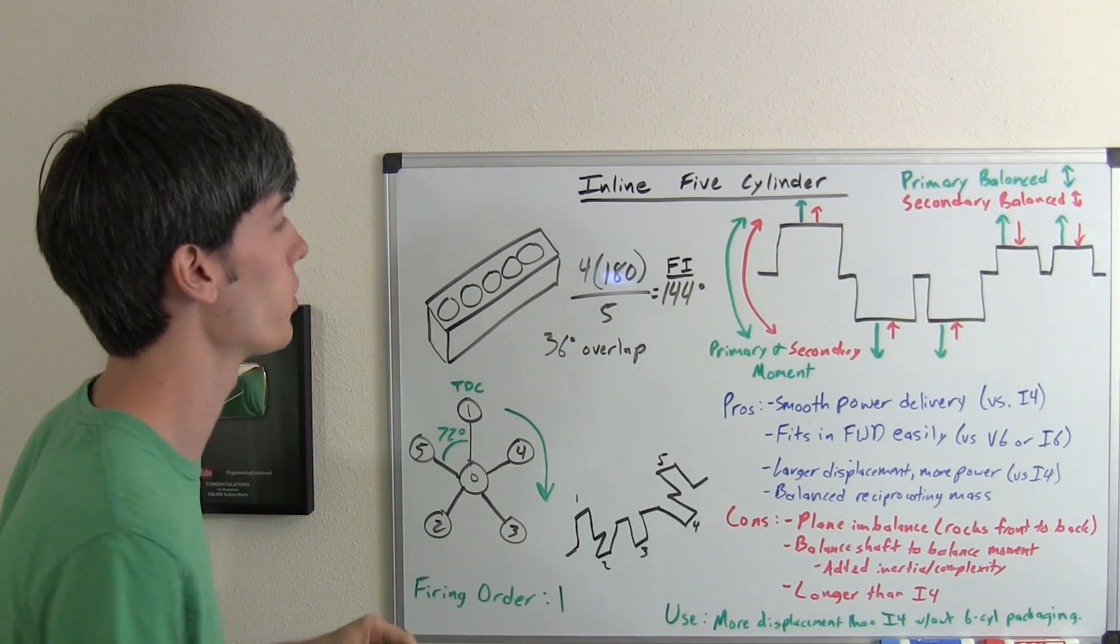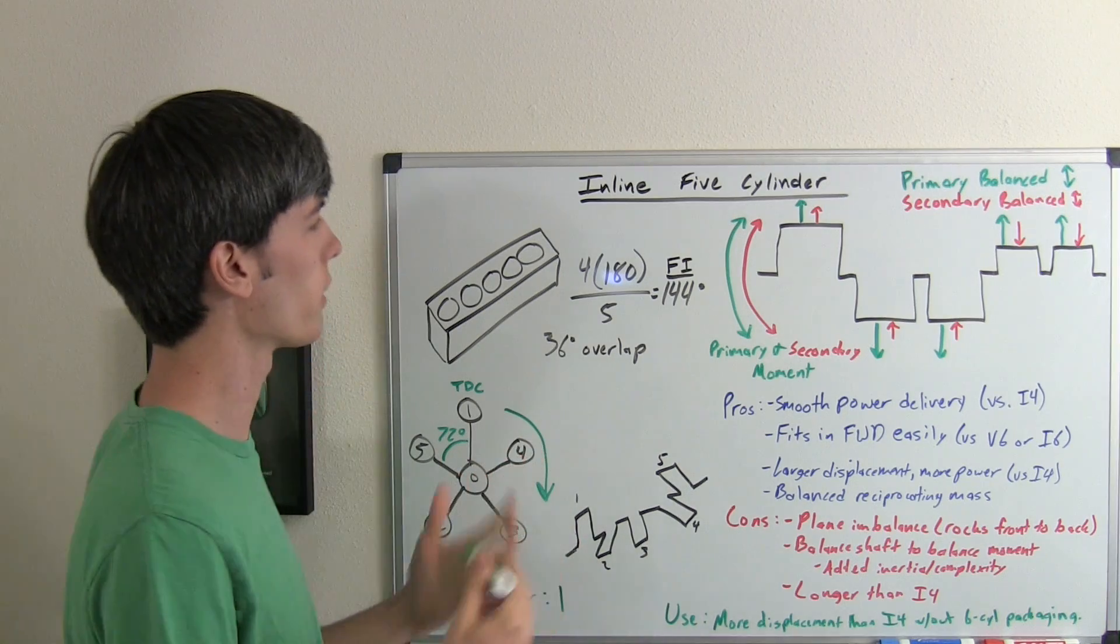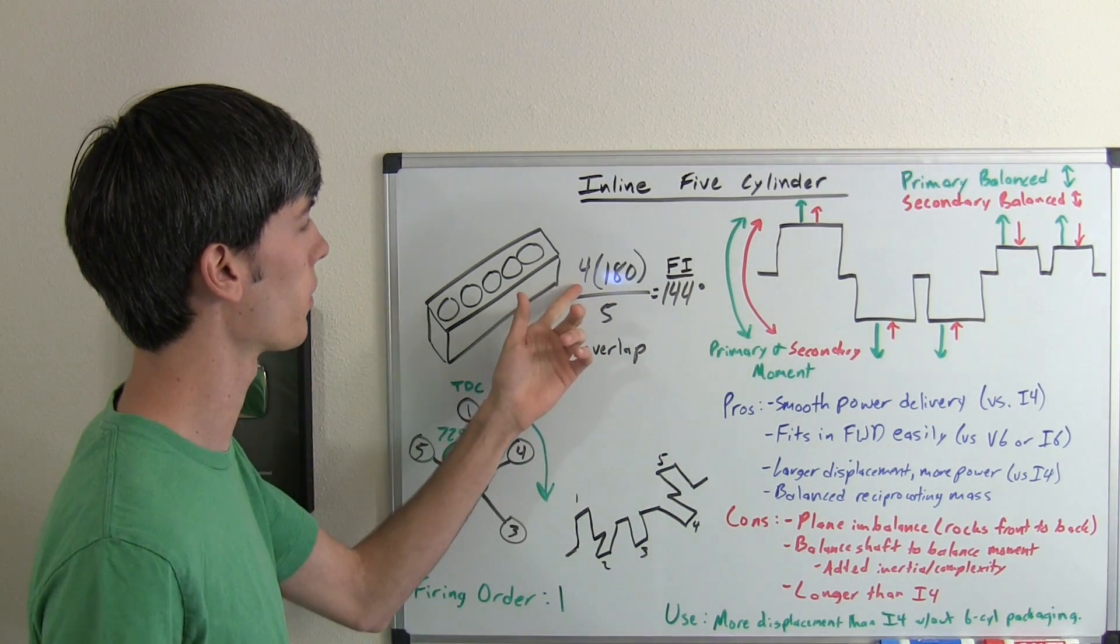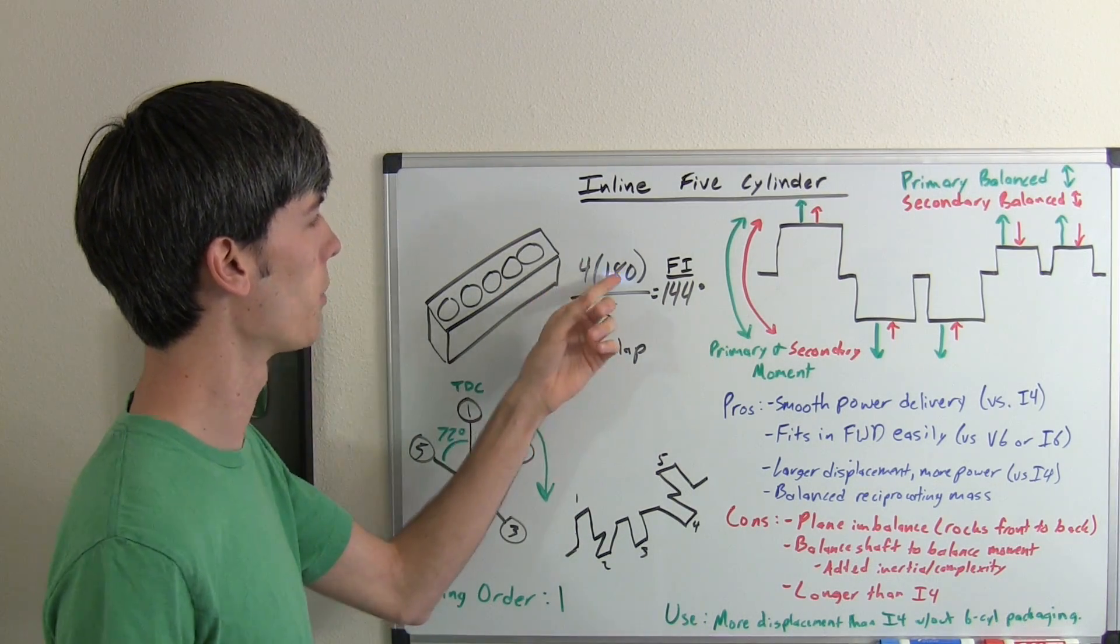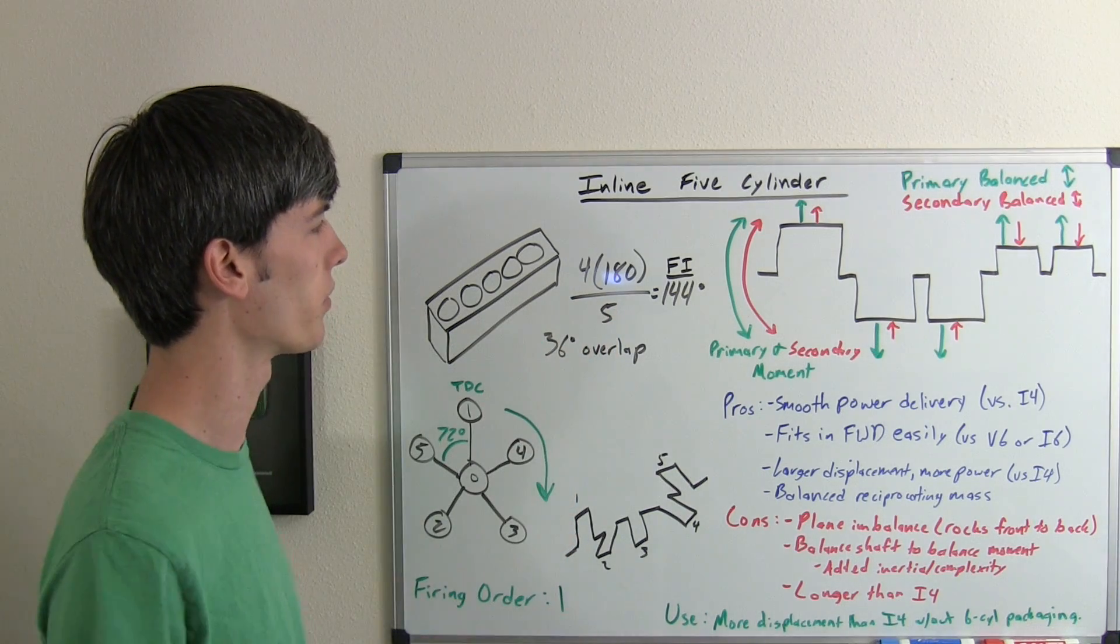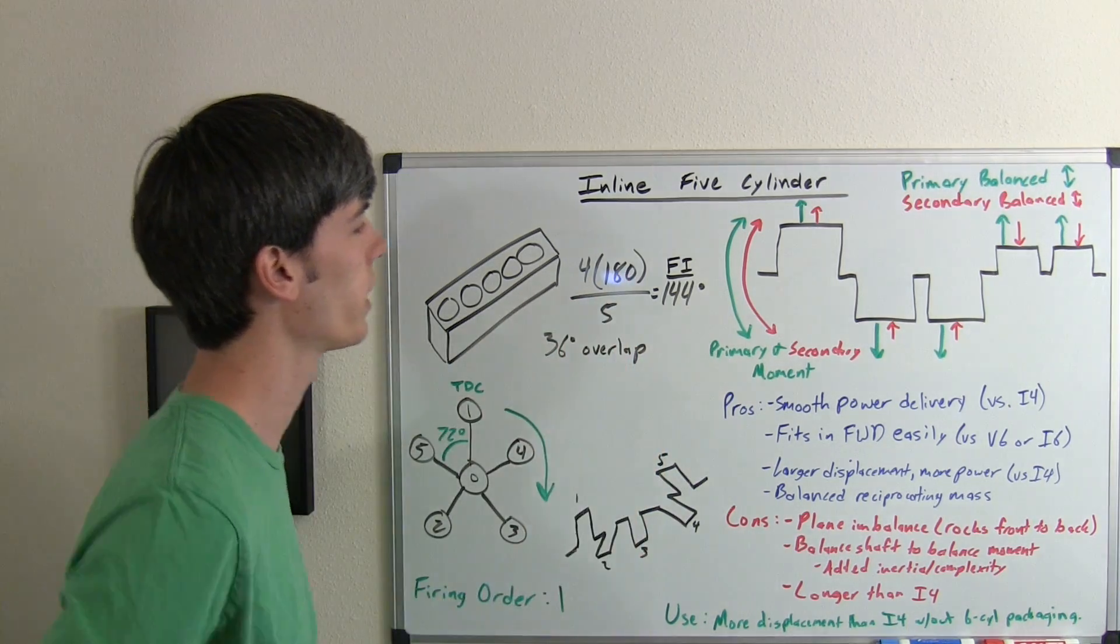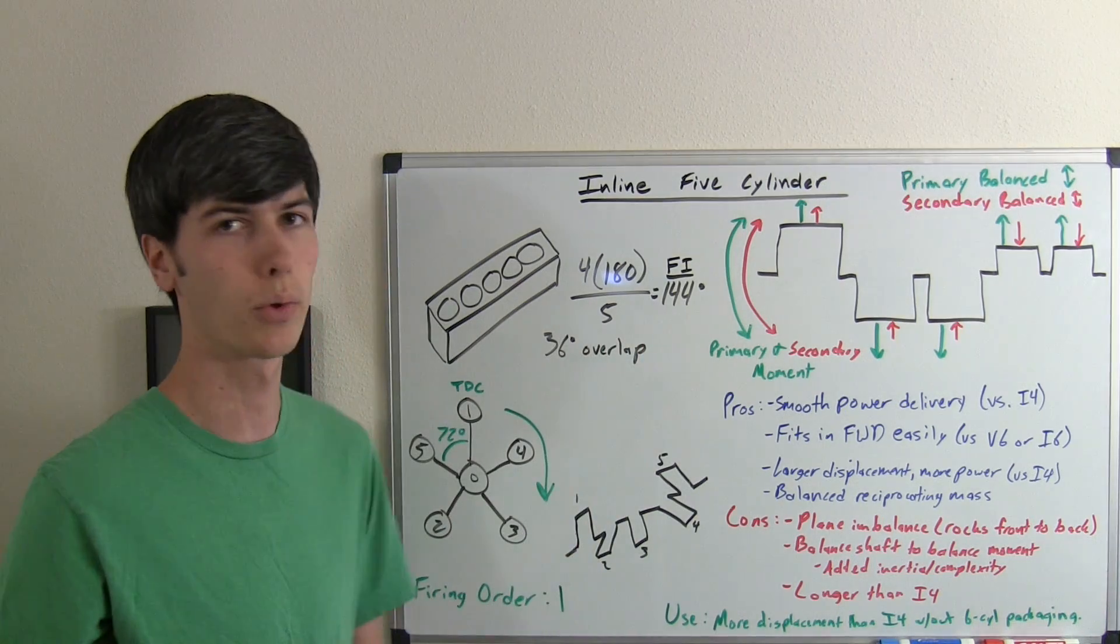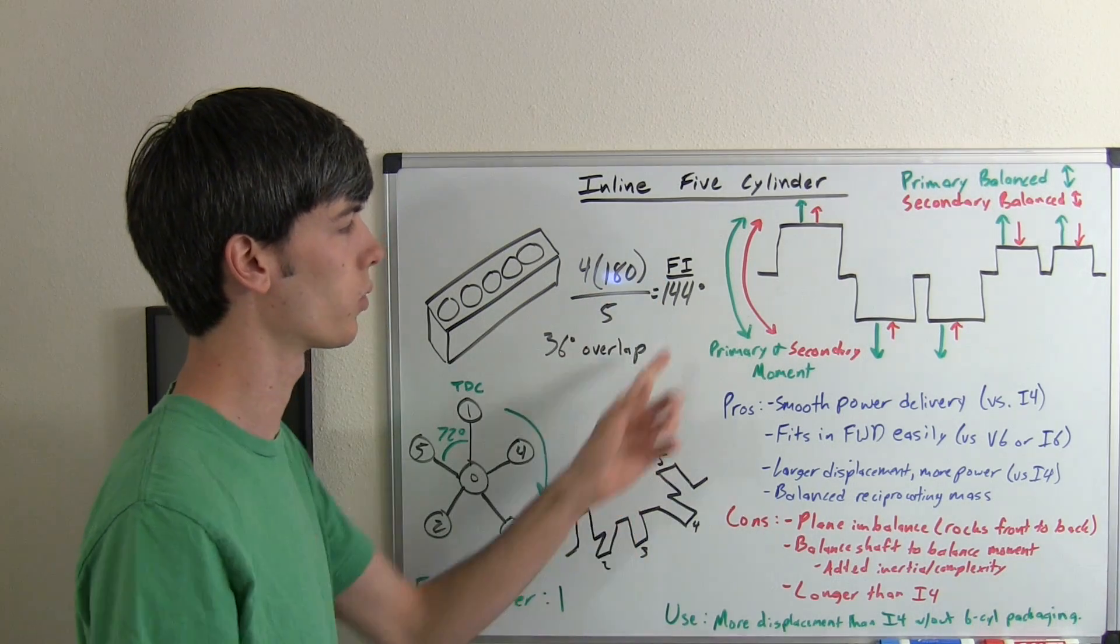If you've watched my video on engine balancing, you know the way of figuring out the firing interval is taking the number of strokes, which is a four-stroke engine, multiplying that by 180 degrees, and dividing that by the number of cylinders. So four times 180, 720, divided by five, that gives you 144. Our firing interval is 144.